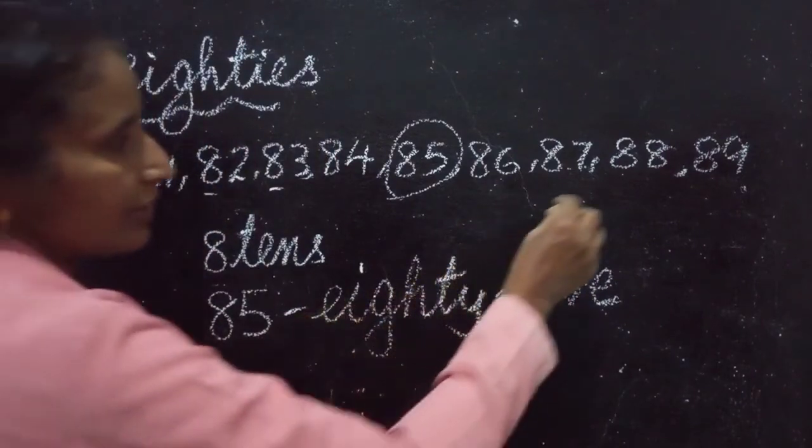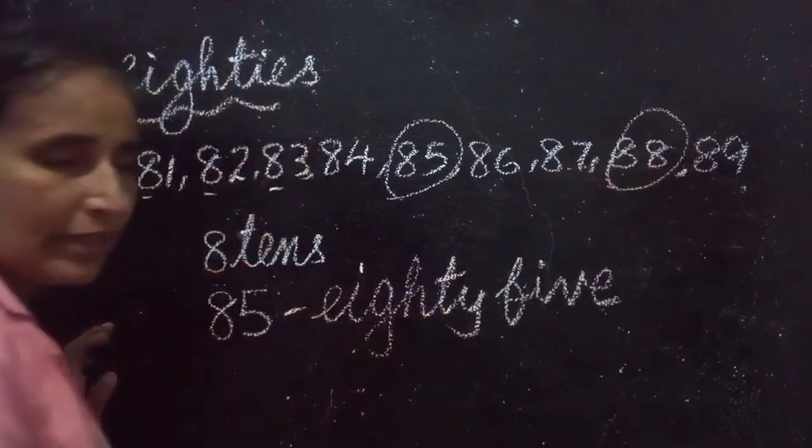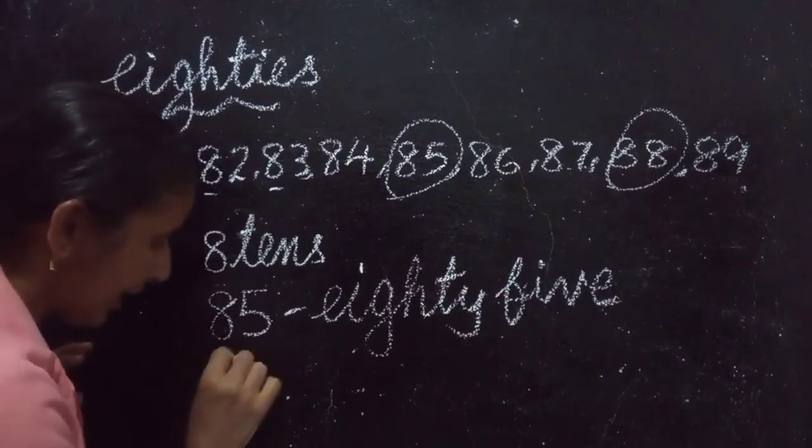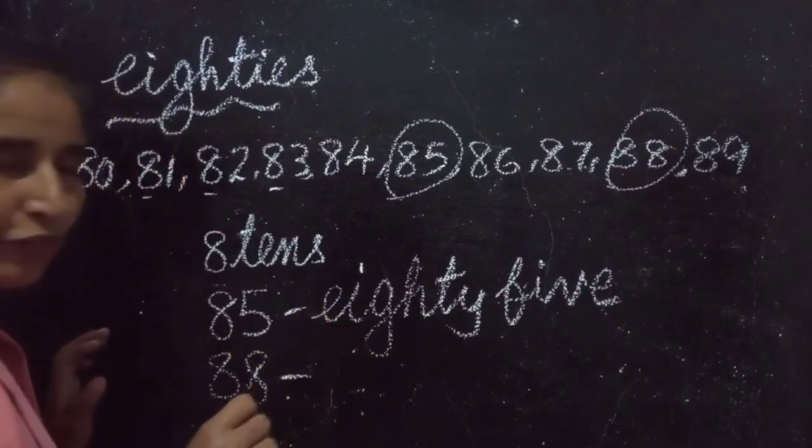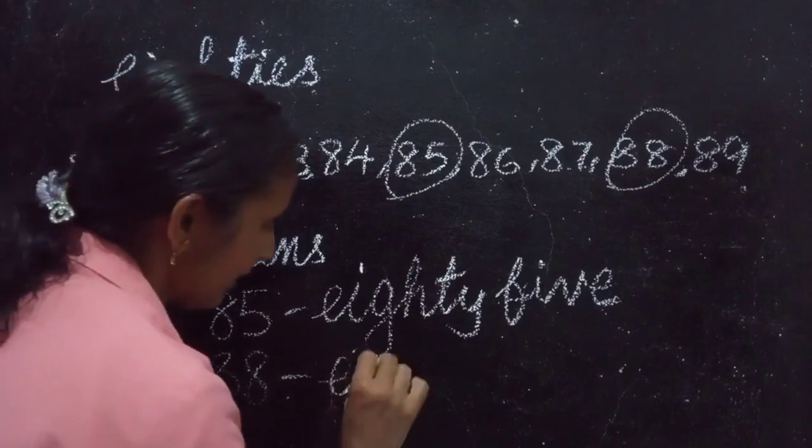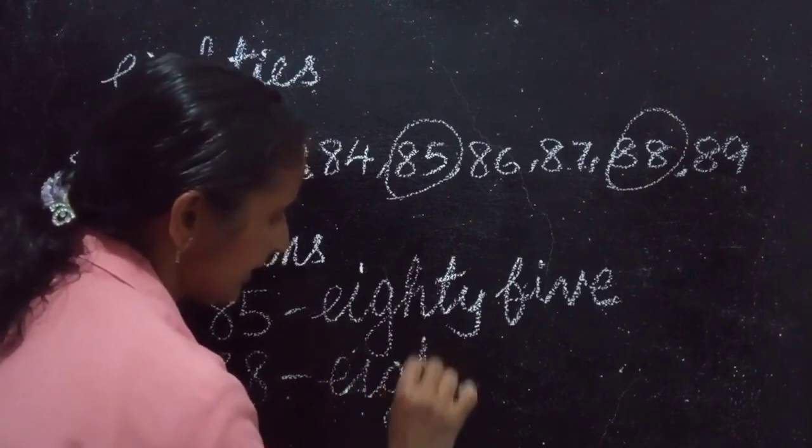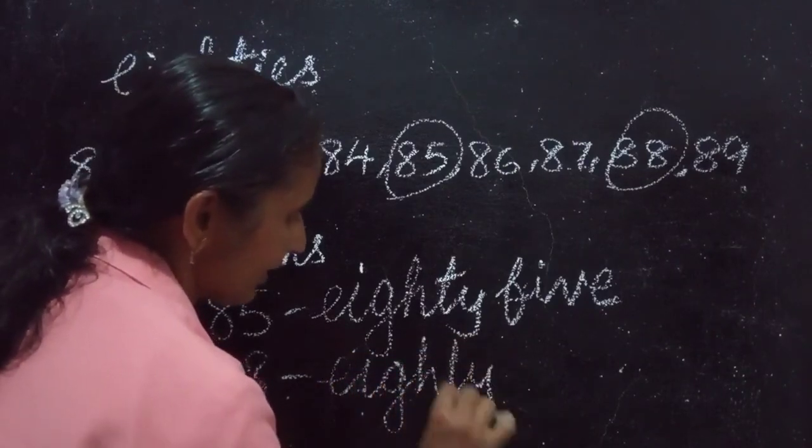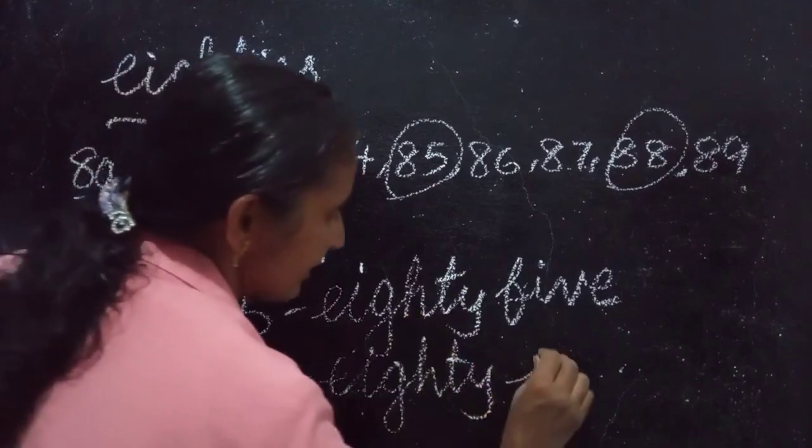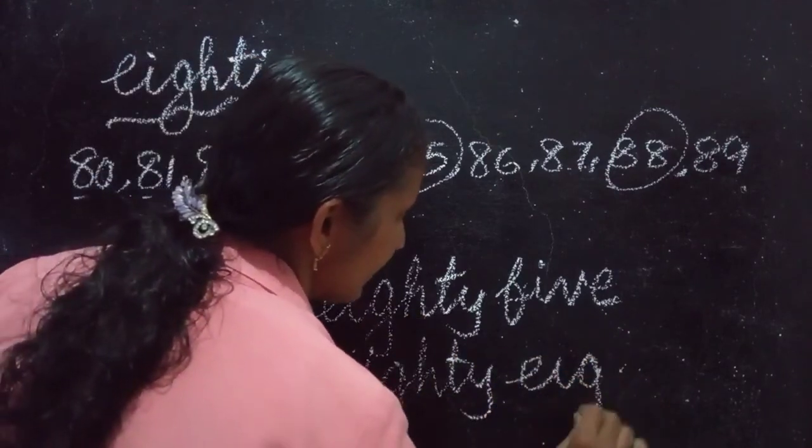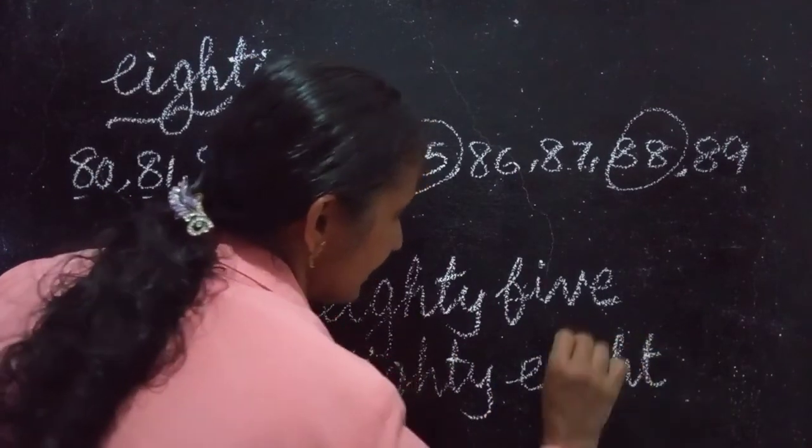One more number. This number. What is this number is called? 88. What is the number name of 88? E-I-G-H-T-Y 88. E-I-G-H-T 8. 88.